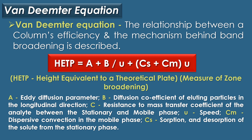HETP stands for Height Equivalent to a Theoretical Plate, and it is the measure of zone broadening. In the formula, A is the eddy diffusion parameter; B represents the diffusion coefficient of eluting particles in the longitudinal direction; C represents the resistance to mass transfer coefficient of the analyte between the stationary and mobile phase; u represents speed; Cm represents dispersive convection in the mobile phase; and Cs represents the sorption and desorption of the solute from the stationary phase.